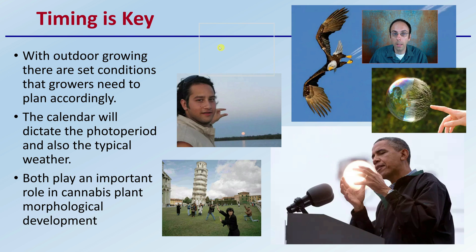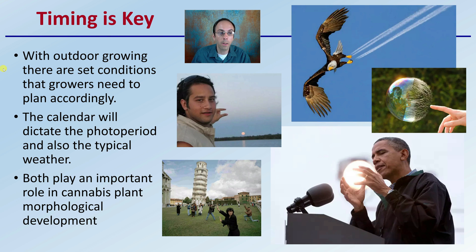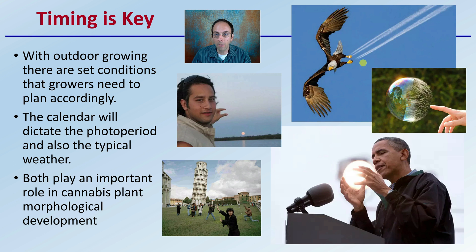Now, timing is key. With outdoor growing, there are a set of conditions that growers need to plan accordingly. The calendar will dictate the photoperiod and also the typical weather to be expected. Both play an important role in cannabis plant morphology development, so we want to make sure our timing is spot on — because if we're off, it definitely starts to look very awkward.